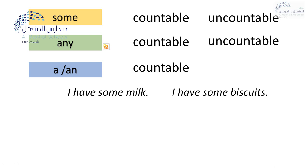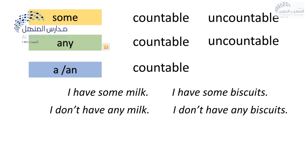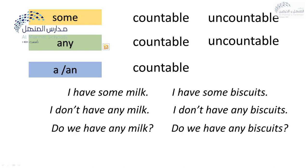For these examples: I have some milk; I have some biscuits. So we use some for countable nouns like biscuits and uncountable like milk. I don't have any milk — we use any for negation with uncountable nouns. I don't have any biscuits — any with negation and countable nouns. So any is for both countable and uncountable nouns. Do we have any milk? Do we have any biscuits? We can use it in questions too.